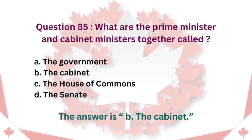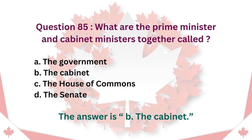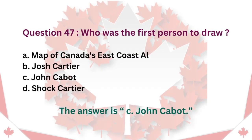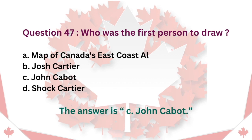Question 85: What are the prime minister and cabinet ministers together called? A. The government. B. The cabinet. C. The house of commons. D. The senate. The answer is B. The cabinet.